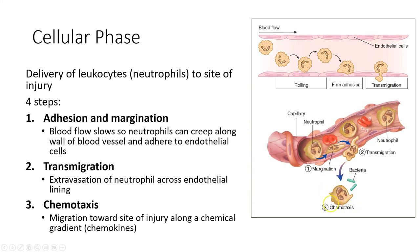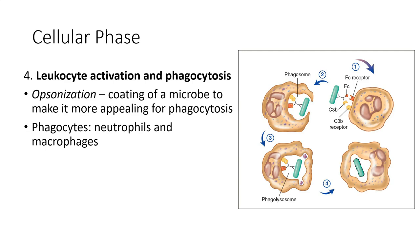The third step is chemotaxis. Once the cell has squeezed through the endothelial lining, it needs to reach a specific part of the tissue. A chemical trail called a chemokine is left for the neutrophil to follow to the site of injury — much like walking into a mall and following the smell of food to find the food court.